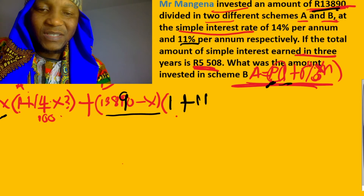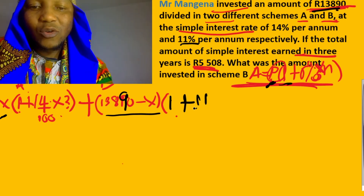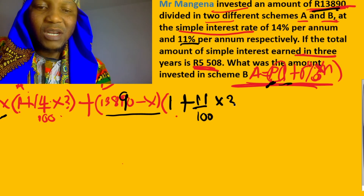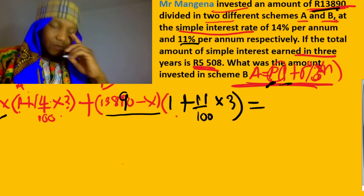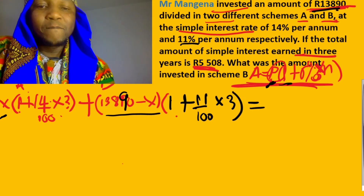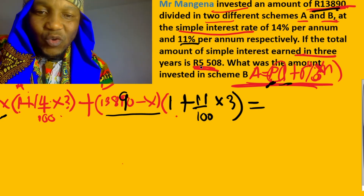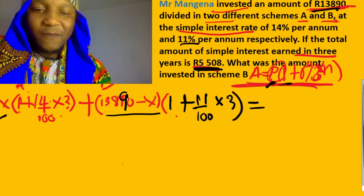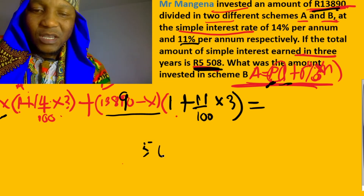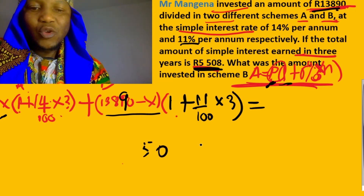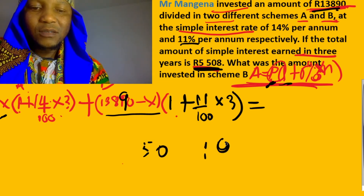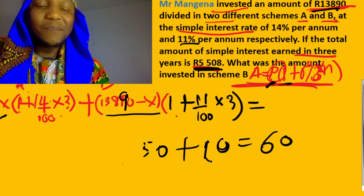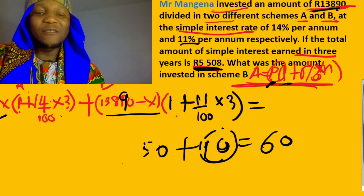The interest rate for the second scheme equals 11 percent, so you can write 11 over 100, and multiply by 3 years. Now look - if you have 50 and you invest it and they say you earn interest of 10, the total amount is going to be 60. That 10 is what you earned from what you invested.